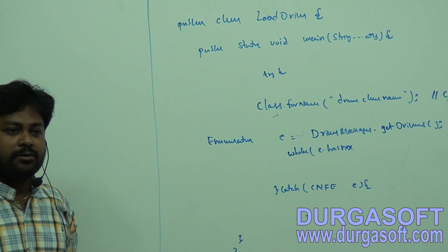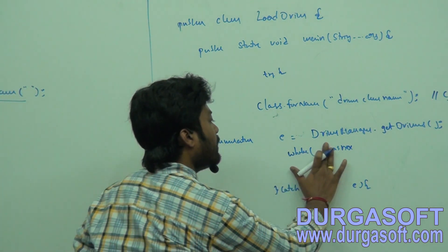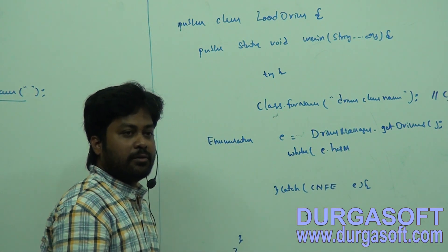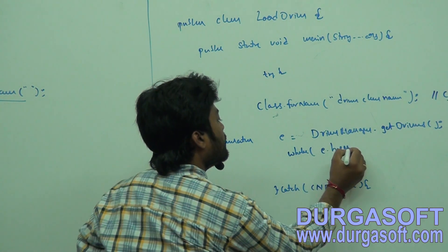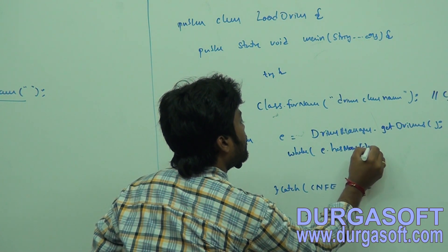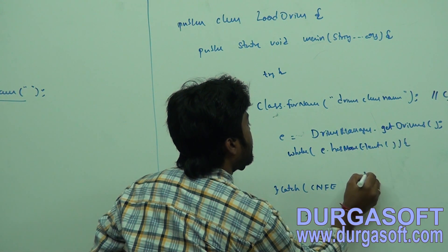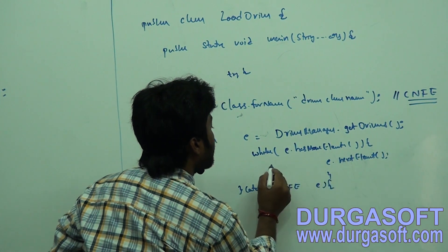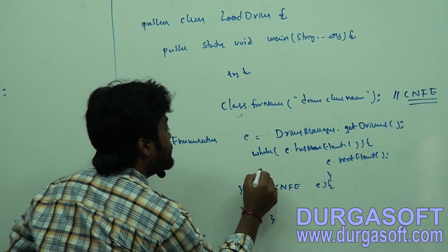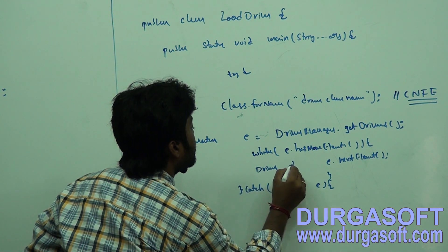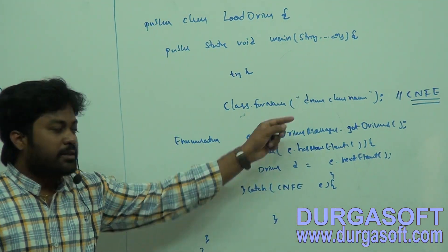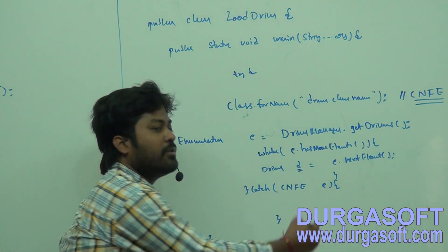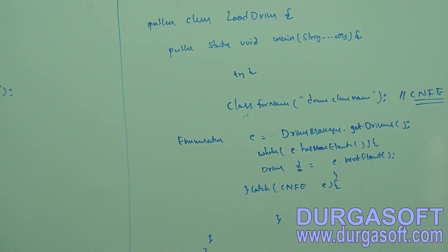To iterate the enumeration, use a while loop with e.hasMoreElements(). Then call e.nextElement() to get each element. It will return a Driver object - which driver you are loading, that driver reference will be returned. Finally, using this reference we can find which driver we are loading into the JVM.